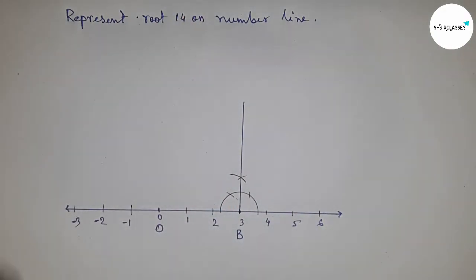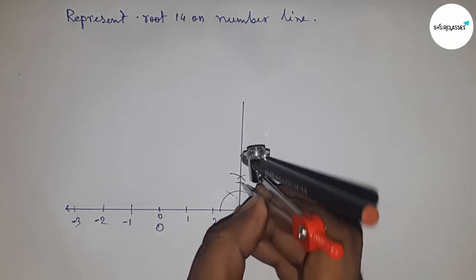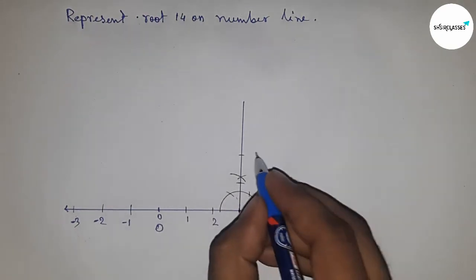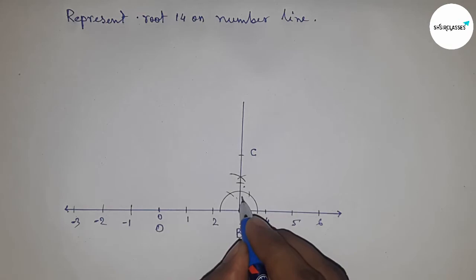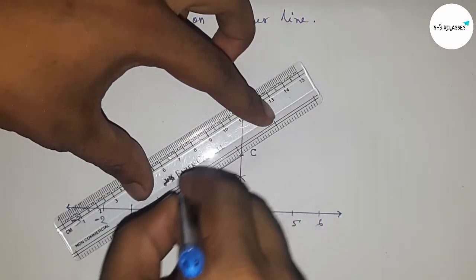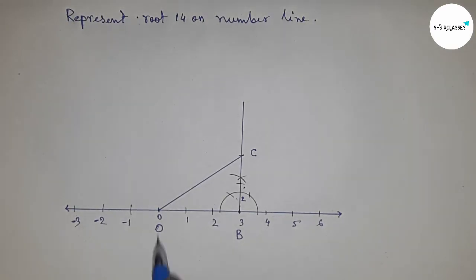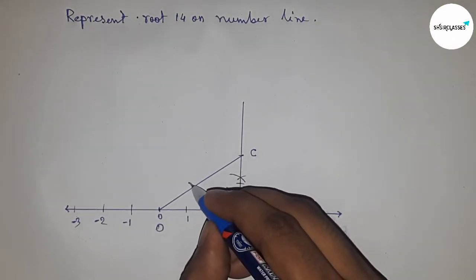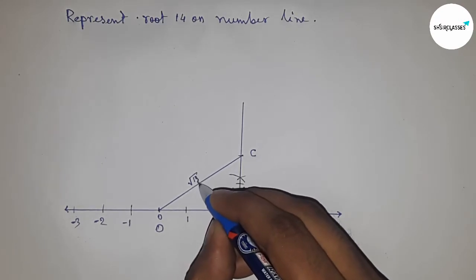Taking the compass, put it here and cut two times. This is point C with two unit lengths. Join these points - this is 3 and 2, so by the Pythagorean theorem, this is √13.